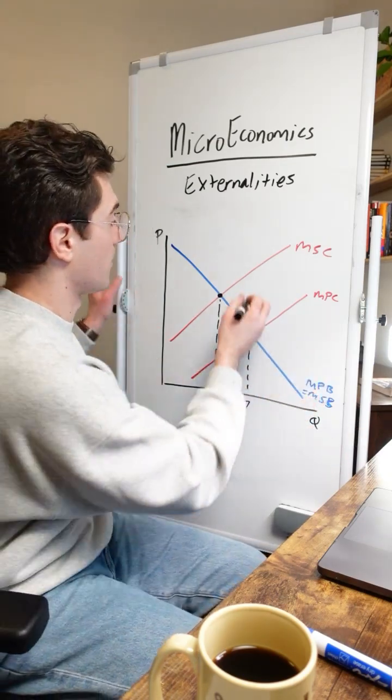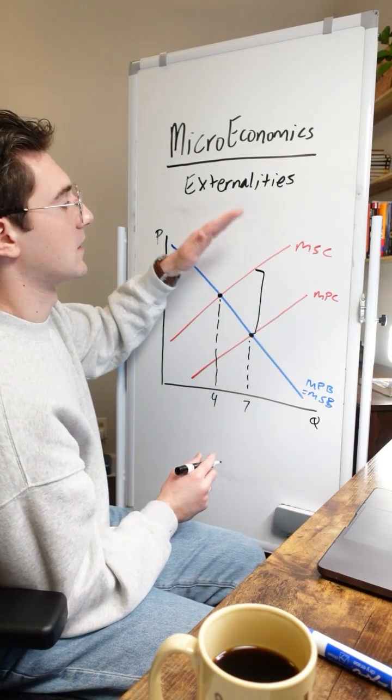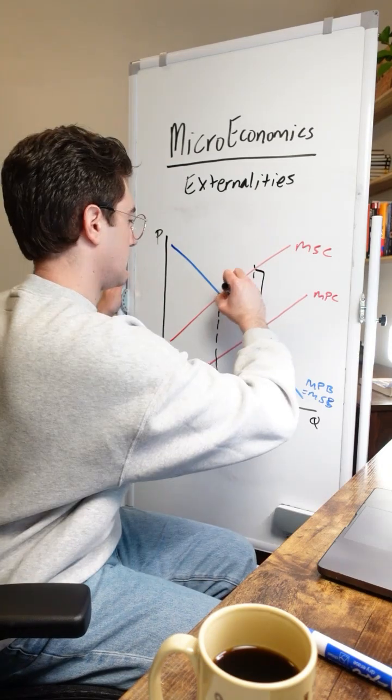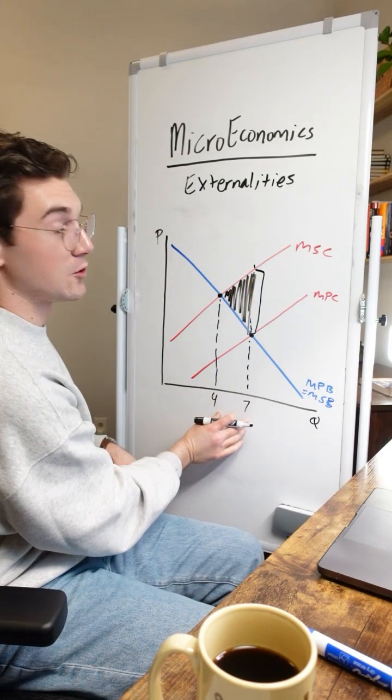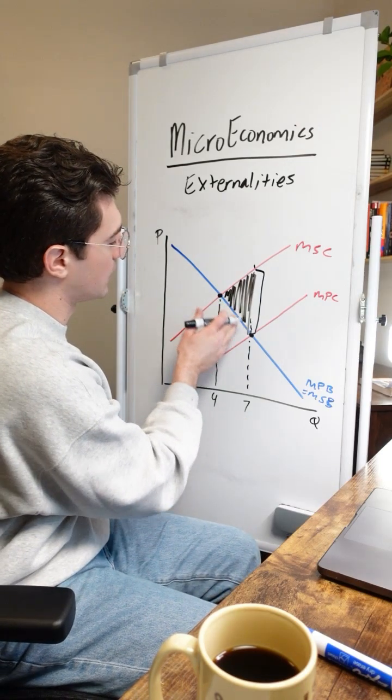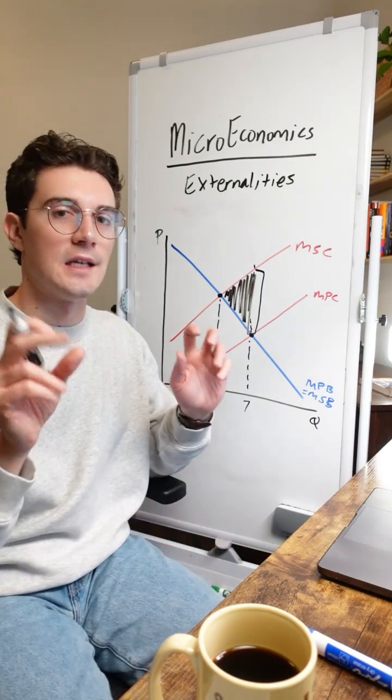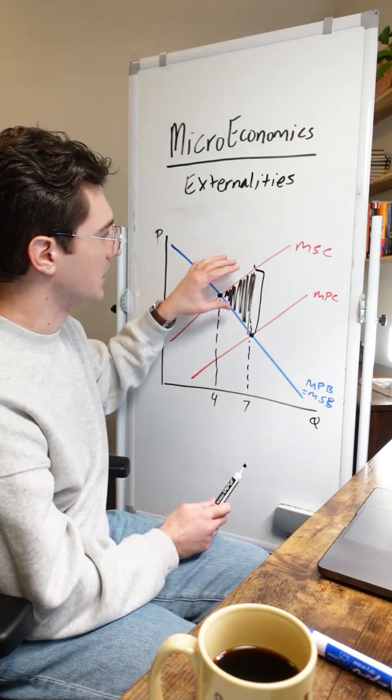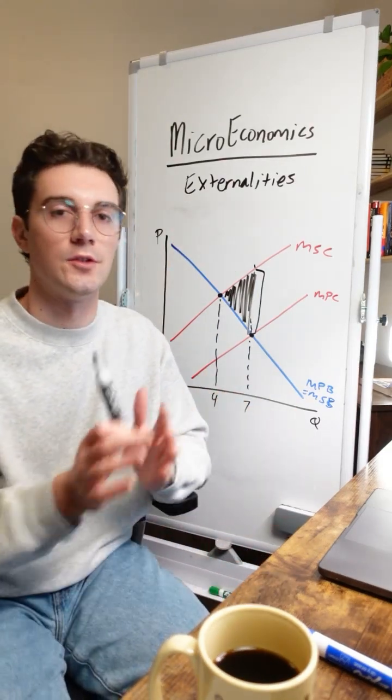There's external costs falling on third parties equating to this vertical distance. It's like the increased costs on society by the private market outputting. This means that this triangle right here is going to be the welfare loss. Why? Because between these units that shouldn't be outputted by the private market, the marginal social benefit, the blue curve, is less than the cost to society, the red curve. So society is taking a loss on these units that shouldn't be outputted. Always look at the area between these social curves when it comes to welfare loss because welfare has to do with society.